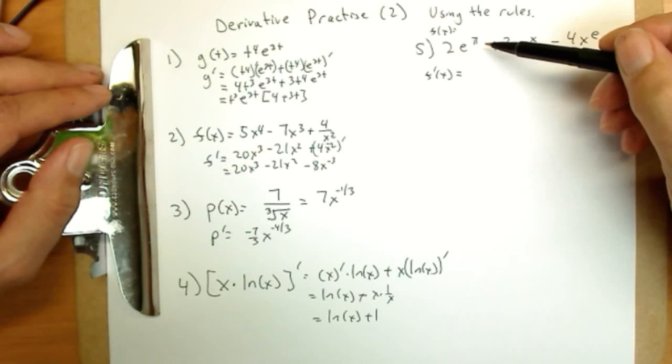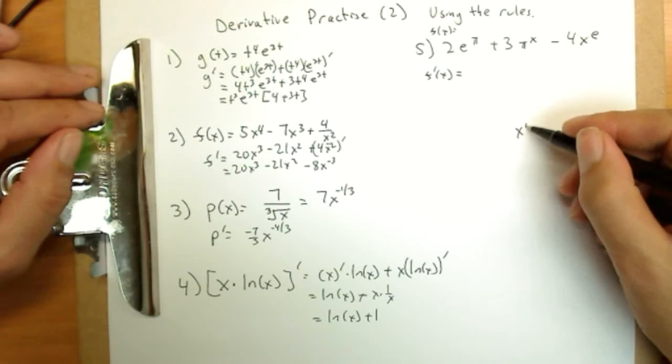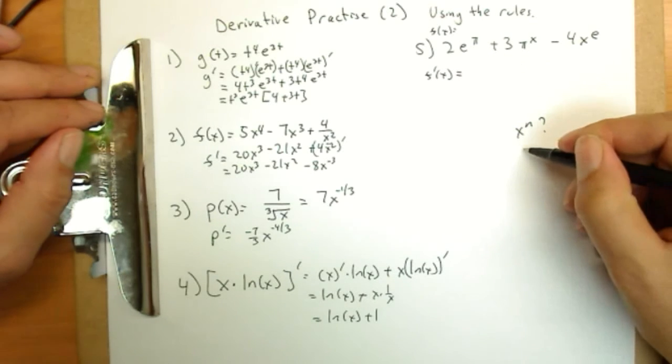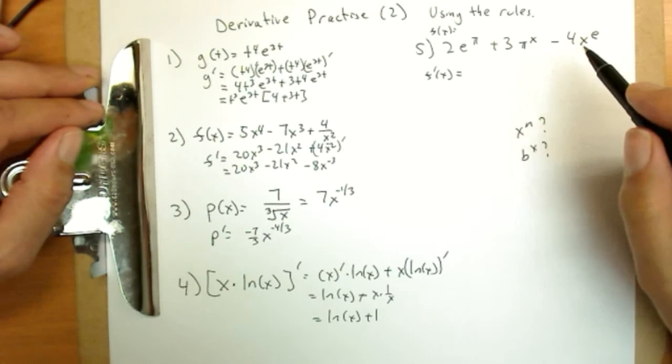And the last one, 2e to the pi. Now it might be easy to get confused. Is this going to be like the rule x to the n? Is it going to be like b to the x? We have those two rules to work on, and all three of these are really going to come into question.